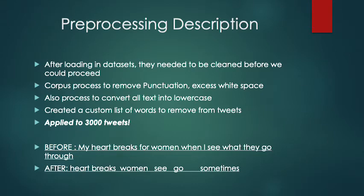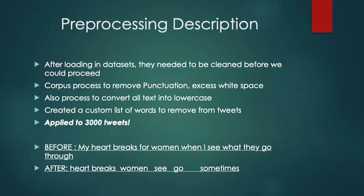Just to give you an idea of the process — I don't want to get too detailed on the technical aspects — but the first step was to pre-process the documents. After loading the data sets into the software R, they needed to be cleaned before I could proceed. R uses a process called corpus to remove punctuation, excess white space; you can convert text into lowercase, create a custom list of words to remove from the tweets, and apply all this data cleaning to thousands of tweets in the span of a few seconds. Below there's an example of a tweet before the data cleaning and a tweet after, all done in a few seconds.